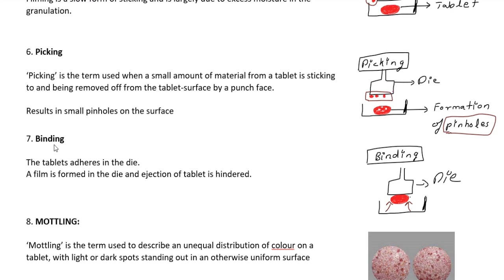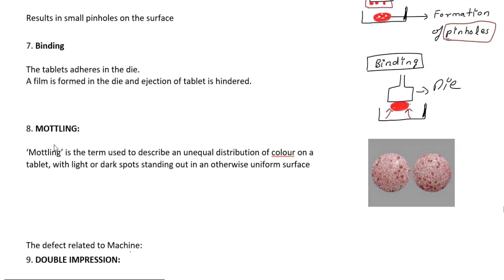Mottling refers to unequal color distribution on the surface with dark and light spots. This is mottling.